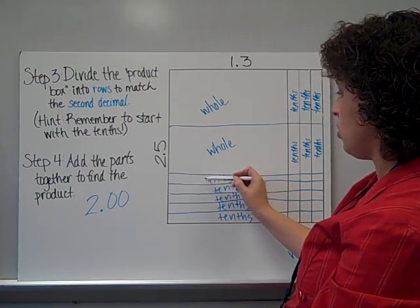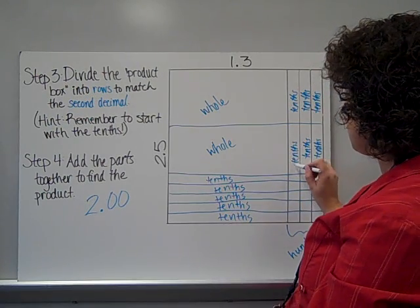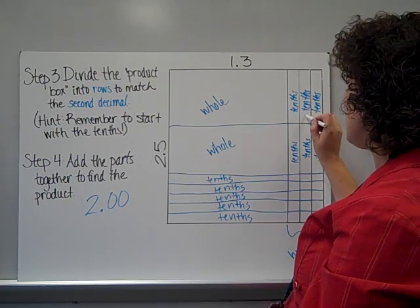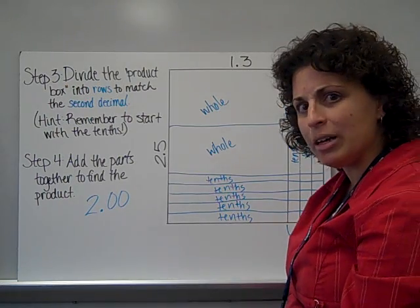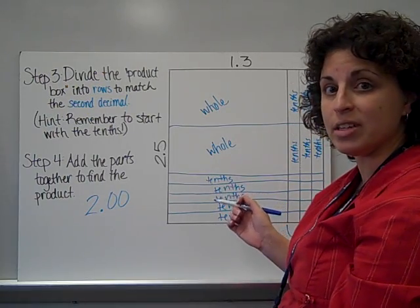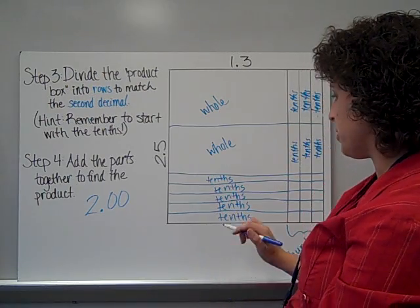Now I want to count out my tenths, 1 tenths, 2 tenths, 3 tenths, 4 tenths, 5 tenths, 6 tenths, 7 tenths, 8 tenths, 9 tenths, 10 tenths, 11 tenths. Well, how do I write that? Well, there is a way to write 11 tenths, but let me show you something else first.